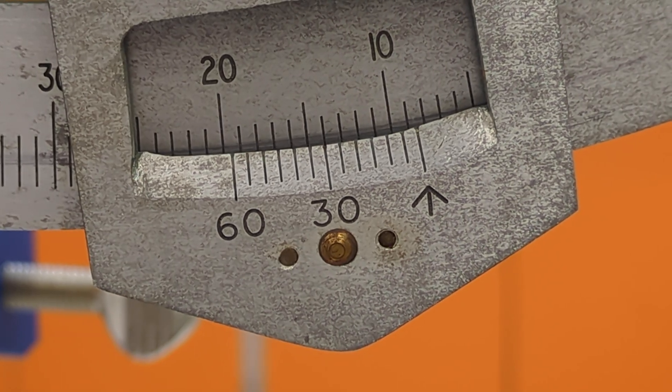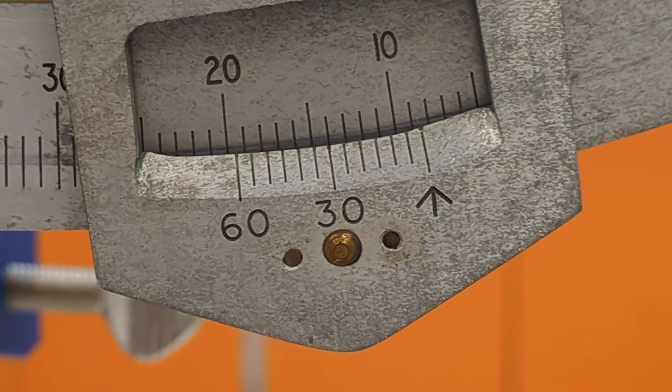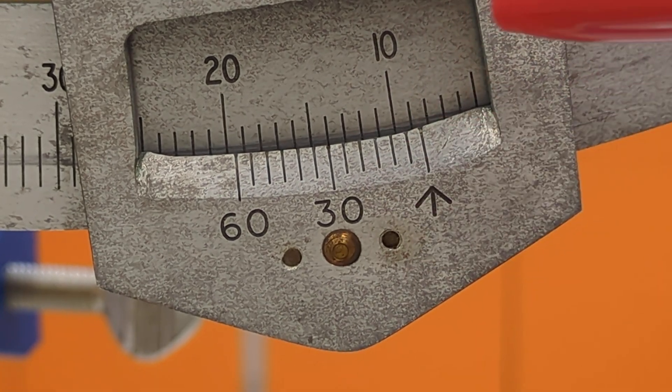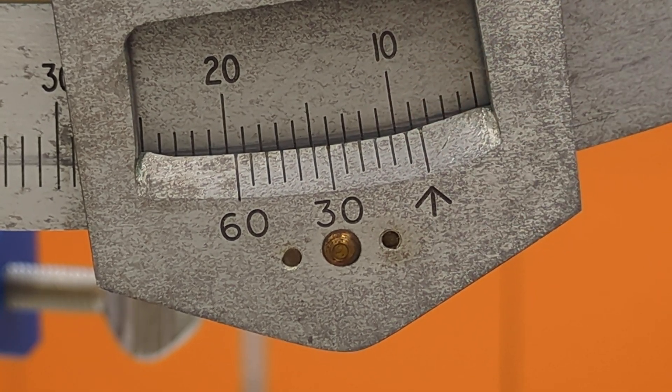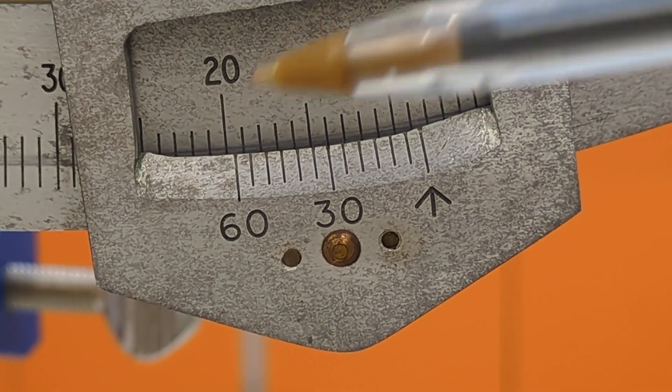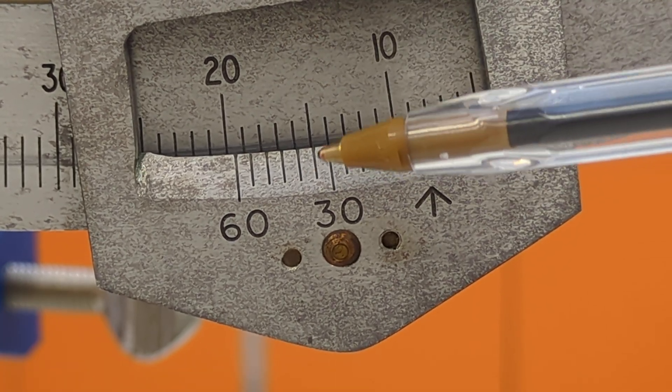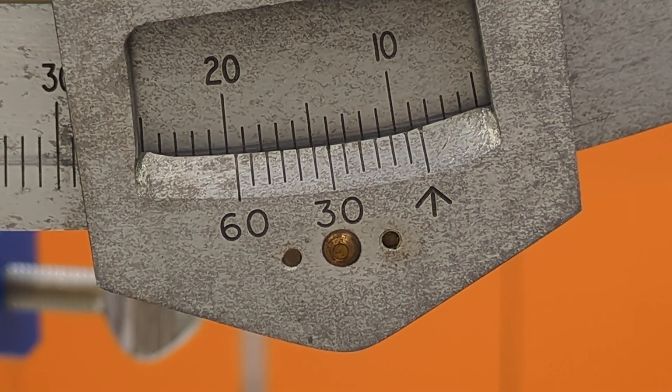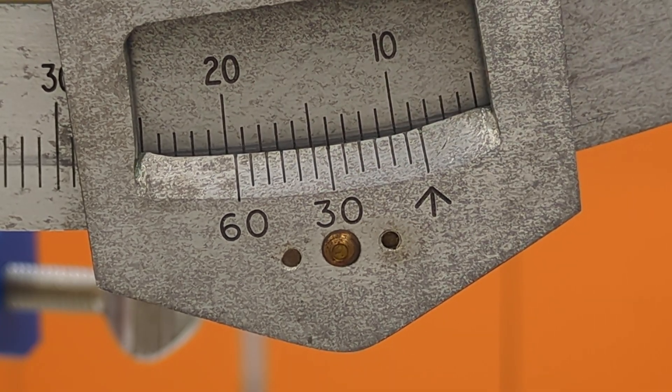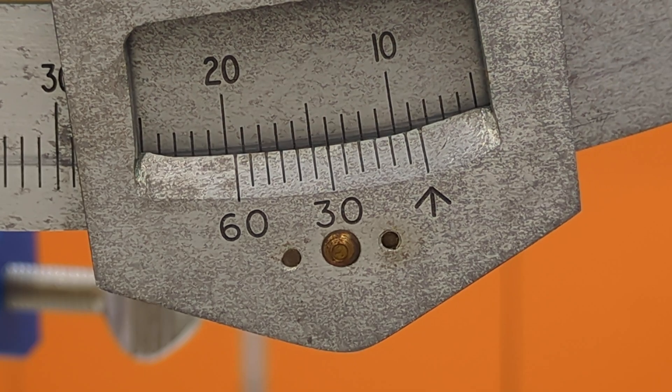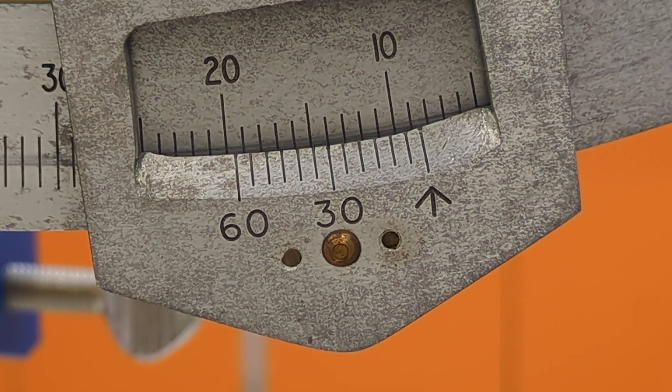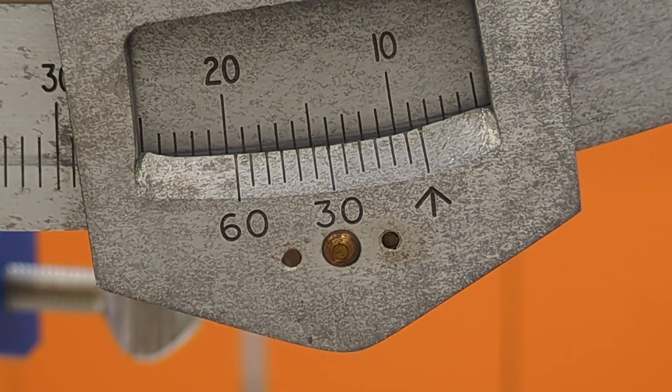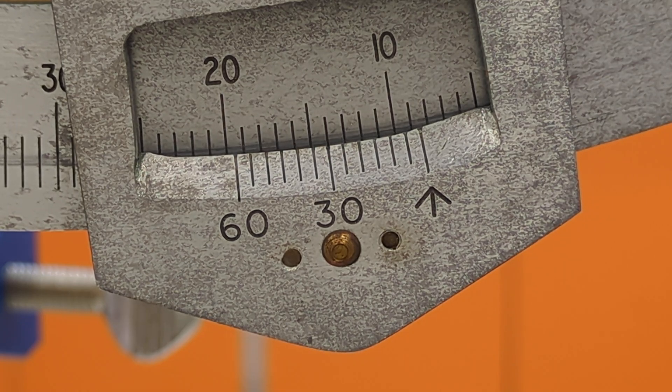So there's that vernier I was just talking about. You can see that the arrow here has gone past the 8 degrees, but not the 9 degrees. And I reckon that this one here at the 30 arc minutes is the one that lines up the best. Which is why I said 8 degrees and 30 arc minutes, which, subtract the zero error, is 8 degrees and 10 arc minutes. So there we go. That's how you use a sextant.